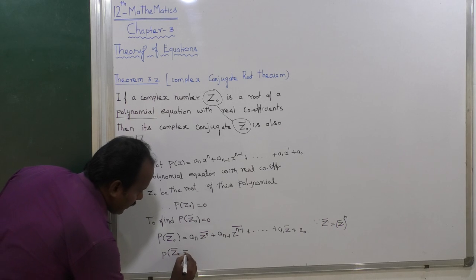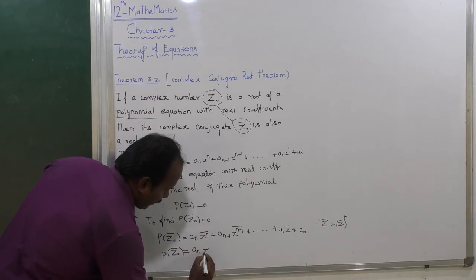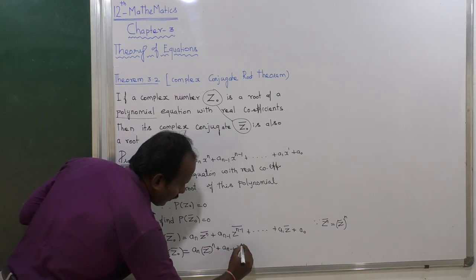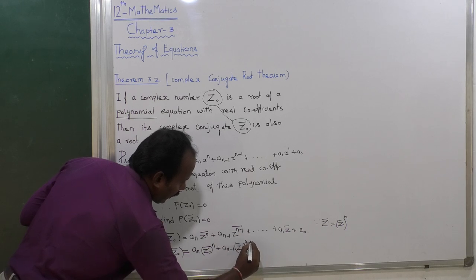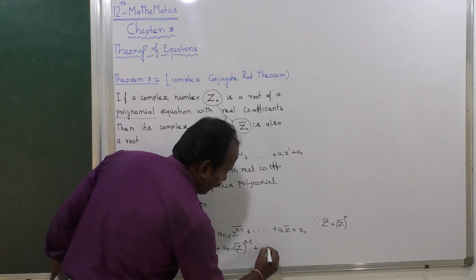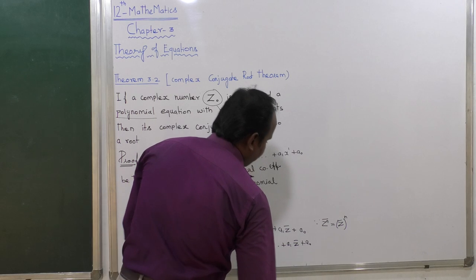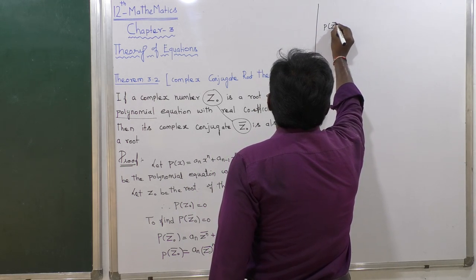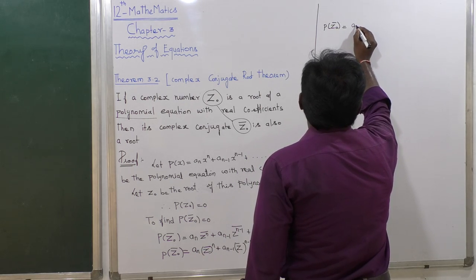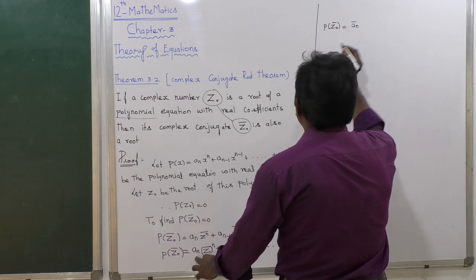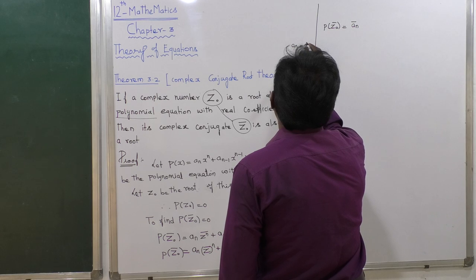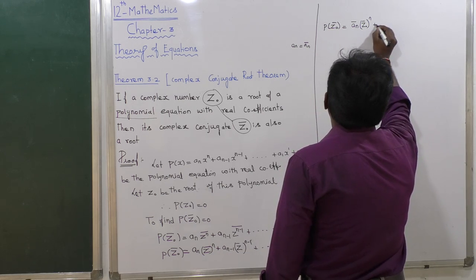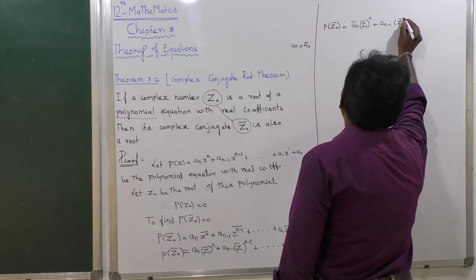Applying that result, p of z₀-bar is equal to aₙ times z₀-bar to the whole power n, plus aₙ₋₁ times z₀-bar to the whole power n minus 1, plus ... plus a₁ z₀-bar plus a₀. Now, since the coefficients are real constants, the conjugate of a constant equals itself — that is, aₙ-bar equals aₙ.